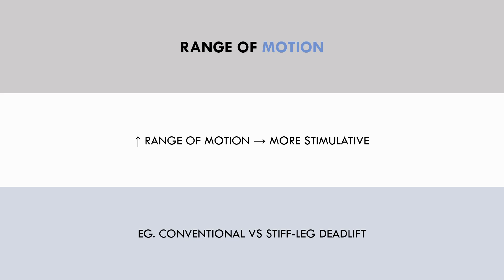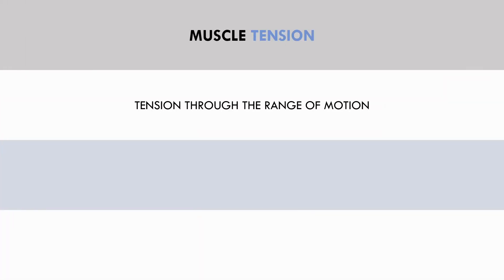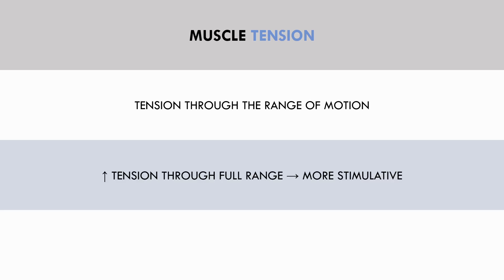The second factor is muscle tension. This refers to how much tension is placed on the muscle throughout the exercise. Generally speaking, an exercise which allows significant tension to be placed on the muscle throughout the entire range of motion is more stimulative than an exercise which has varying levels of tension. For example, a pec deck allows tension on the pecs throughout the entire range of motion, while a dumbbell fly involves more tension at the bottom of the lift and less tension at the top.